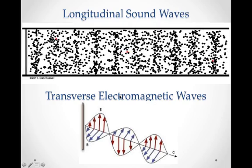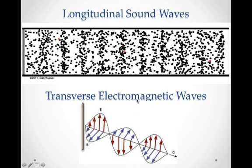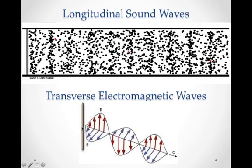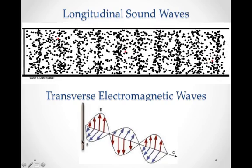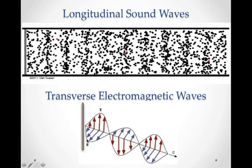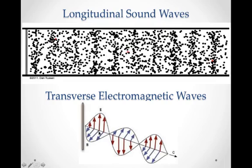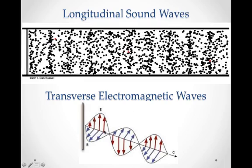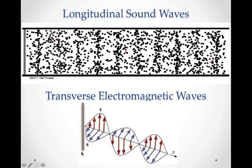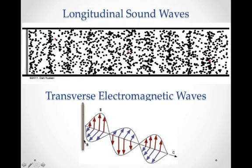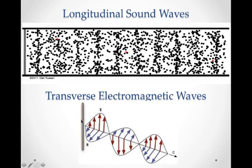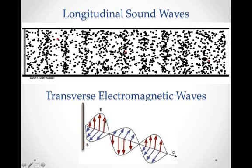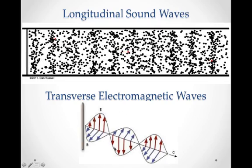An example of a transverse wave is an electromagnetic wave. So if we have electrons running up and down an antenna, then the electromagnetic waves propagate outward from that antenna and perpendicular to that direction of disturbance. So again, the disturbance would be up and down, but the waves would propagate outward away from that antenna.